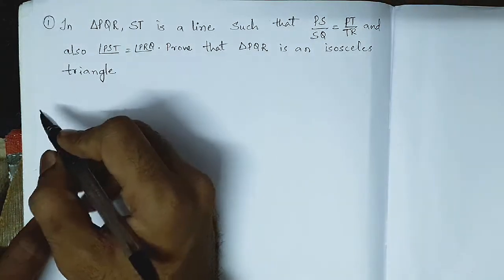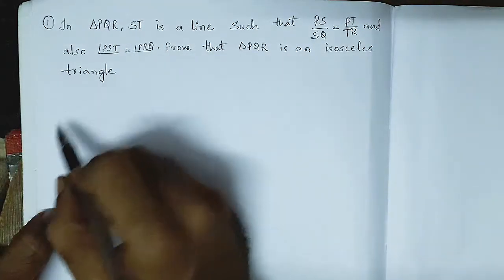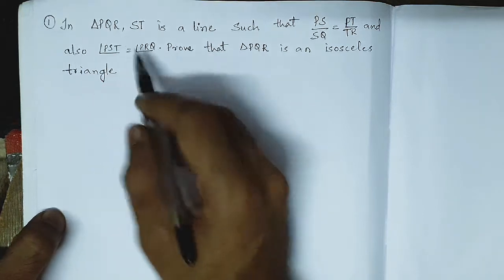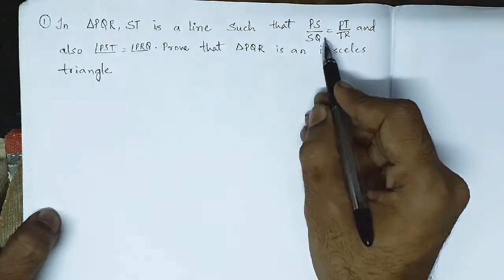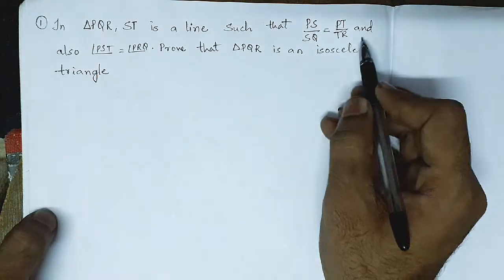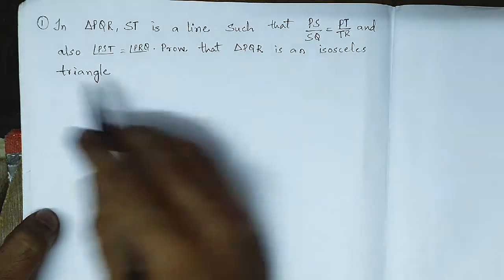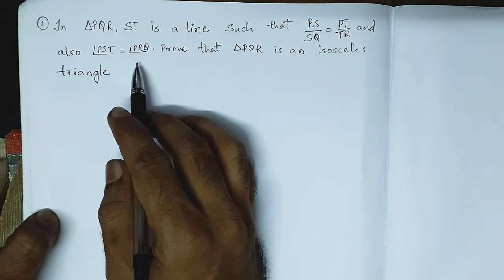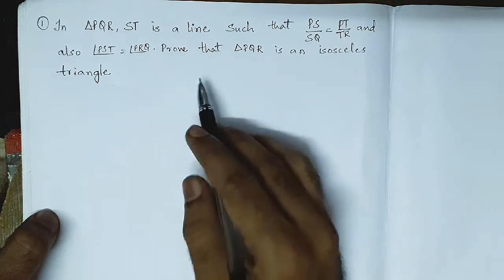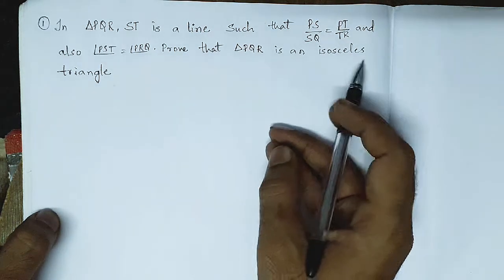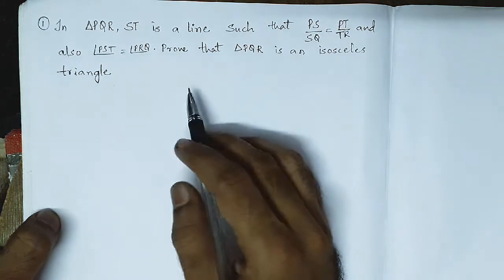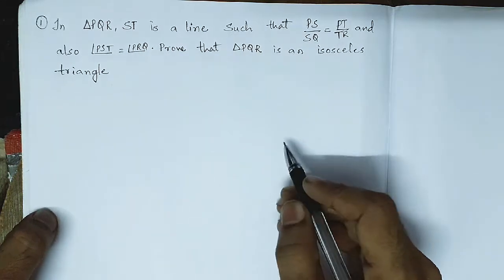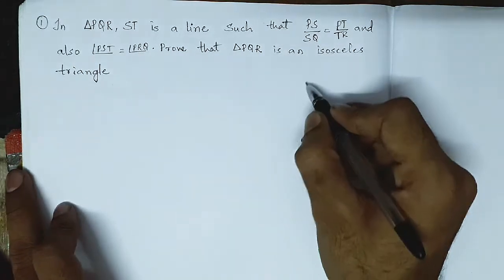This is from exercise number 8.1, first problem. In triangle PQR, ST is a line such that PS by SQ equals PT by TR, and angle PST equals angle PRQ. We have to prove that triangle PQR is an isosceles triangle. Let us draw the figure.